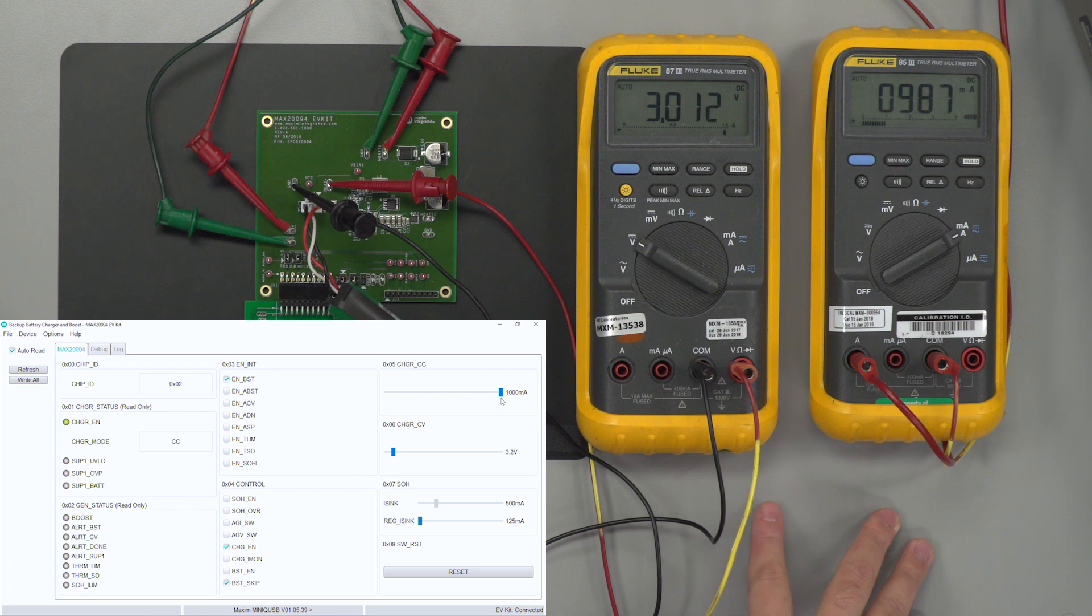So this will go on until we hit very close to that 3.2 volt threshold and then once that happens it'll switch to CV and it'll trickle charge until full charge.